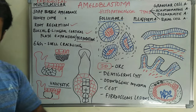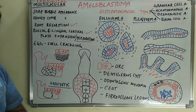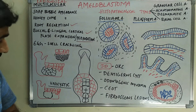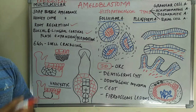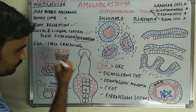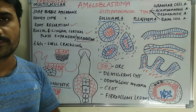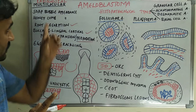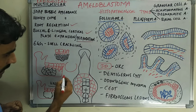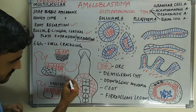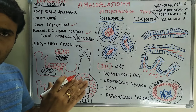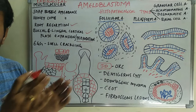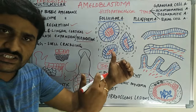In unicystic amyloblastoma, there is only one cystic nature and the border is scalloped — unlike cysts which have a smooth border. In amyloblastoma the border is scalloped. Radiologically, amyloblastoma is divided into multicystic and unicystic types.